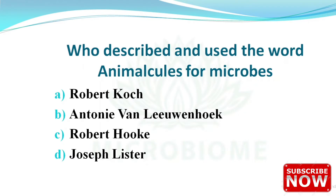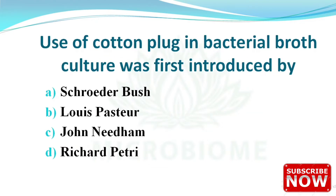Next question: who described and used the word 'animalcules' for microbes? The options are Robert Koch, Antonie van Leeuwenhoek, Robert Hooke, and Joseph Lister. The right answer is option B — Antonie van Leeuwenhoek. 'Animalcules' means tiny animals. Antonie van Leeuwenhoek is universally acknowledged as the father of microbiology.